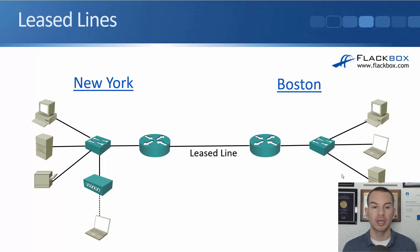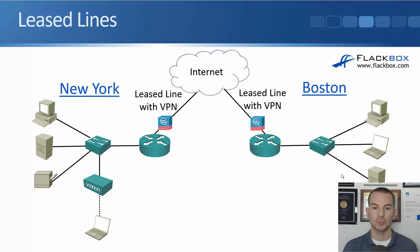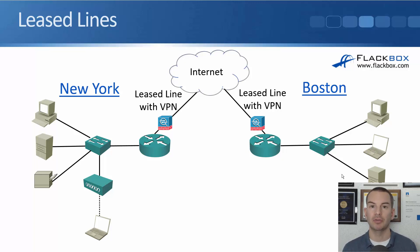Let's say our servers are in New York. Users in both New York and Boston can now access those servers over a private network connection. We're also going to want internet connectivity. For example, in New York, we put a leased line going out to the internet. Users in New York can access the internet from there, and users in Boston can send their traffic over the leased line to New York and break out to the internet from there.